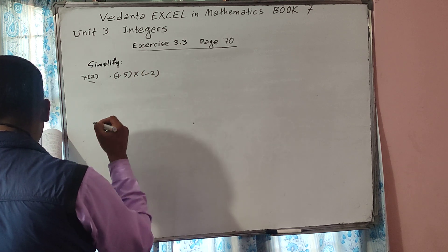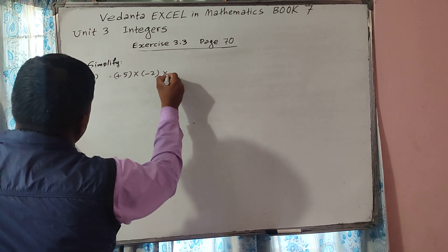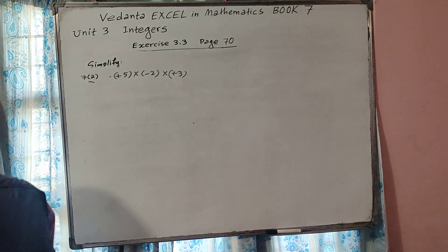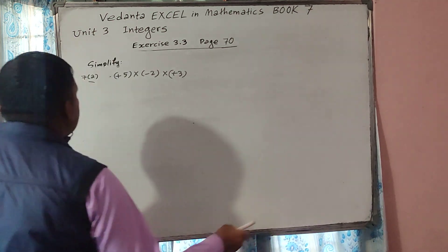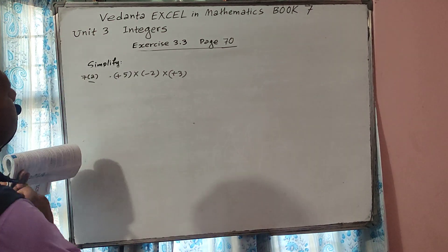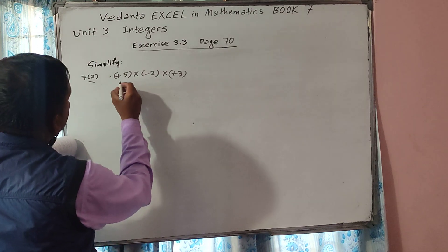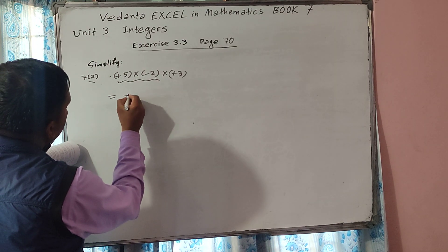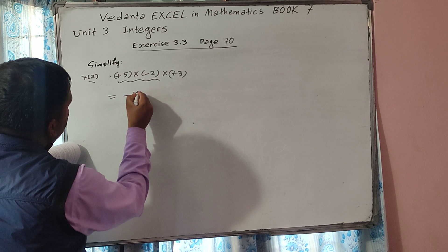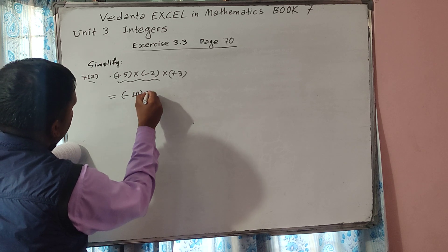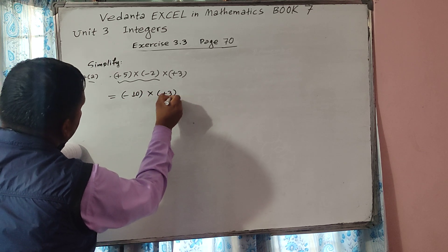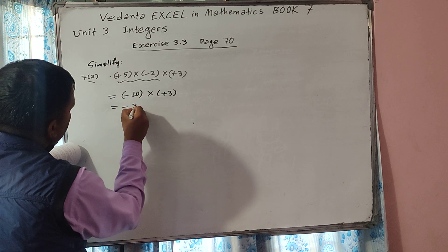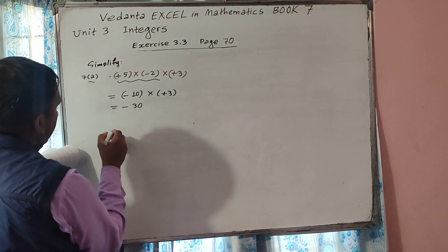Now Question 7A: plus 5 multiplied by minus 2, multiplied by plus 3. Look at the first two integers — plus 5 and minus 2. Plus into minus gives minus, so 5 times 2 is 10, giving minus 10. Then minus 10 multiplied by plus 3 — minus into plus gives minus, so 10 times 3 is 30. Minus 30 is the answer.